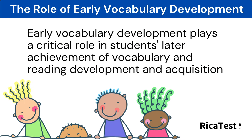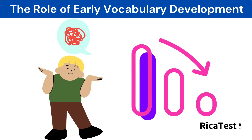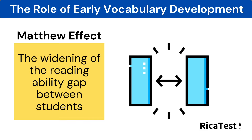Early vocabulary development from pre-kindergarten through second grade plays a critical role in students' later achievement of vocabulary and reading development. The more a child struggles to read, the more frustrated they will feel trying to learn more challenging texts. As a result, struggling students have a high probability of feeling less motivated to read, so they read less. As they read less compared with their peers, the learning gap widens between them and their classmates. This is the same concept as the rich get richer and the poor get poorer, and it's called the Matthew effect — referring to the widening of the reading ability gap between students.